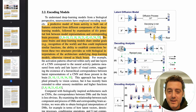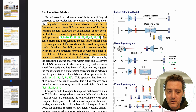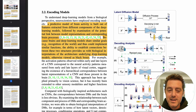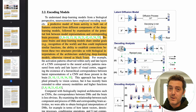They examine the potential link between model representations and corresponding brain processes. The way the model works and the way the brain works are really similar, so by mapping them together they produce similar images. Because brains and deep learning models share similar goals — recognition of the world — and thus could implement similar functions, connecting these two structures provides biological interpretations of the architecture underlying deep learning models, otherwise viewed as black boxes. Right now, the brain is pretty much a black box, and these large language models and Stable Diffusion are also pretty much a black box.